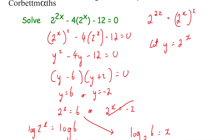Just to recap: we started with the first term and wrote it as 2 to the power of x, all squared, using laws of indices — a power of a power means you split the power up. Then we recognized this as a quadratic, replaced 2 to the power of x with y, and factorized to get y equals 6 or y equals negative 2. Since 2 to the power of x cannot equal negative 2, we solved 2 to the power of x equals 6 and found x.